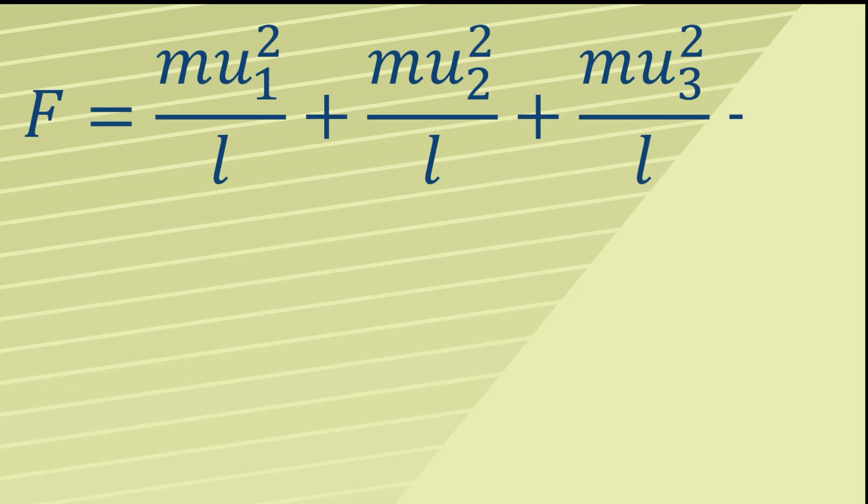In other words, MU1 squared over L plus MU2 squared over L plus MU3 squared over L, plus dot dot dot dot dot dot.